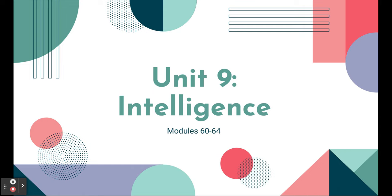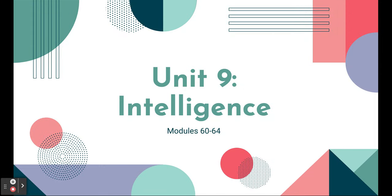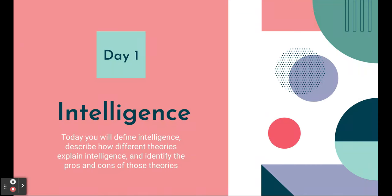This whole unit is a little bit shorter and it is about intelligence. We all have different ideas about what intelligence is, and in psychology it's defined as a specific thing. We're going to understand what it is, how we assess it, different theories on it. Today you're going to define intelligence, describe how different theories explain it, and look at the pros and cons of those theories.